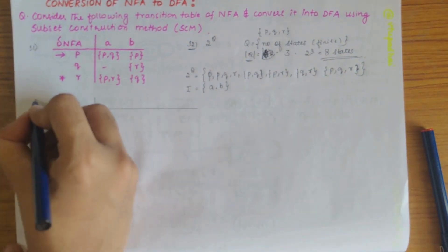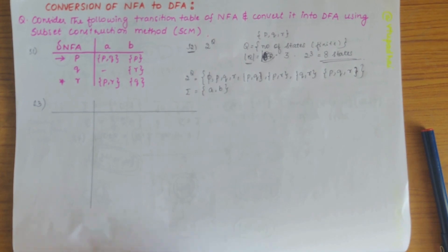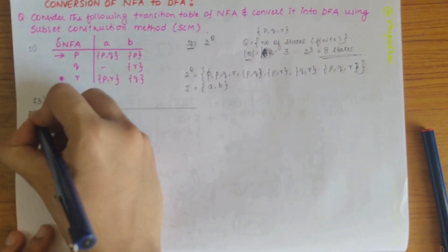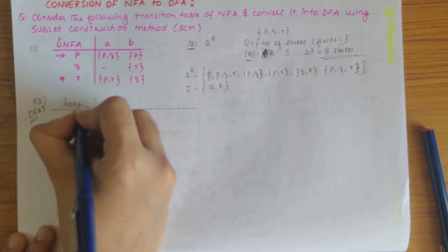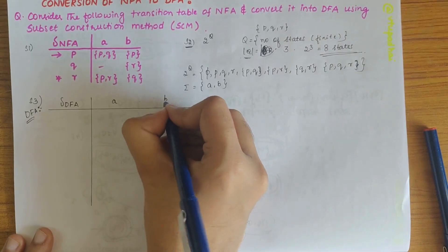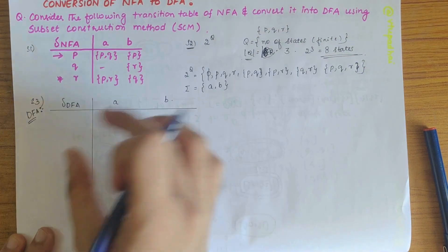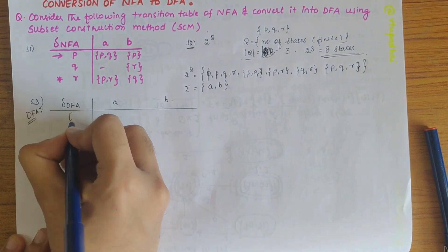Now our next step is to draw the transition table for DFA. So let's write DFA here. So DFA, let's write a and b here. So here we need to write all the 2 power q states in square brackets.